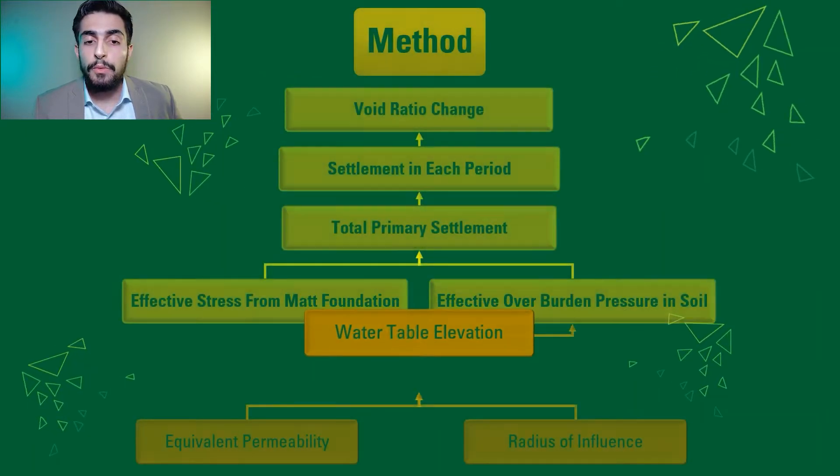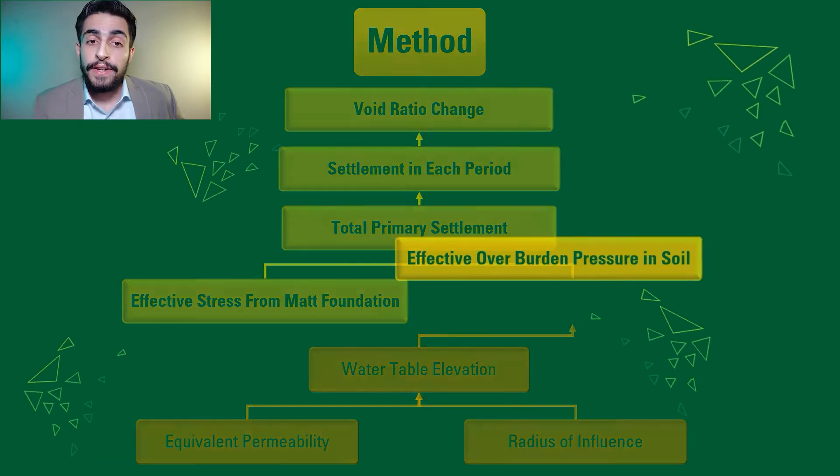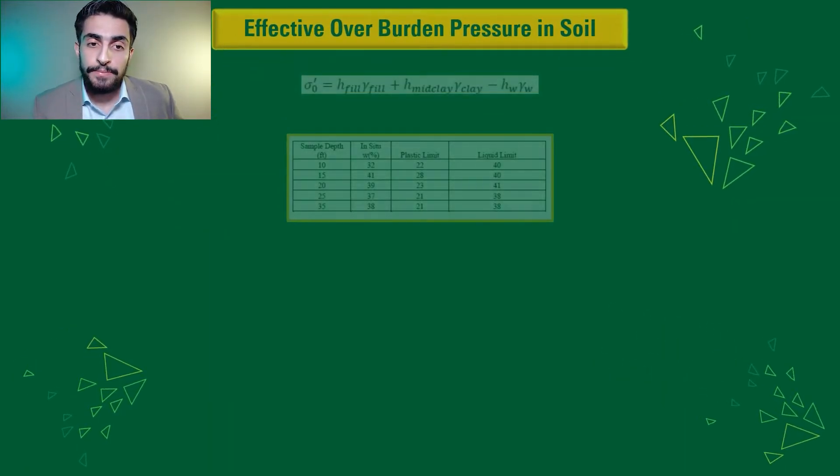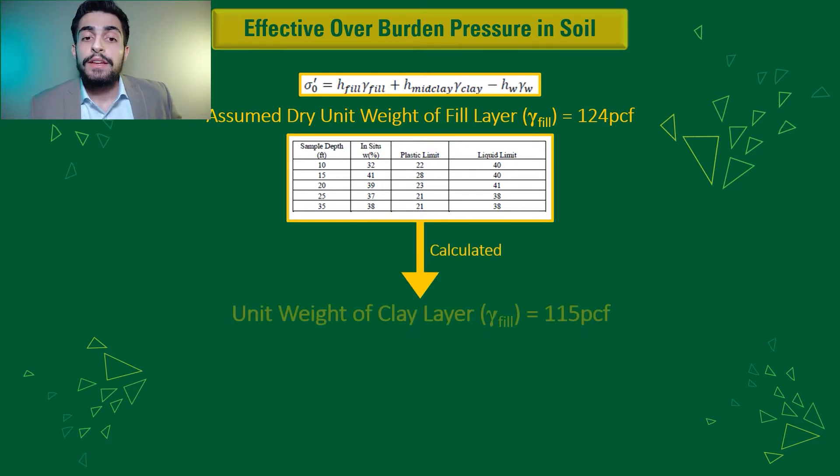Then, taking that water elevation next to calculate the effective overburden pressure in the soil, where we assumed that dry unit weight of fill layer to be 124 PCF, and we calculated from the information given that clay layer unit weight is 115 PCF.